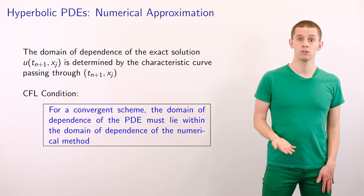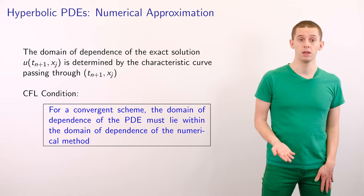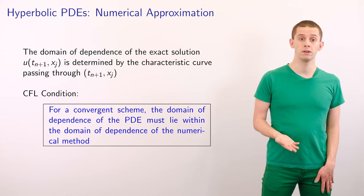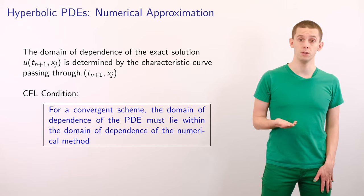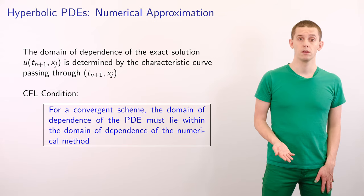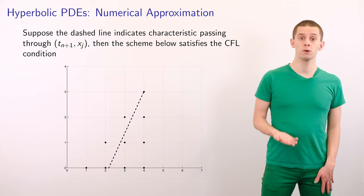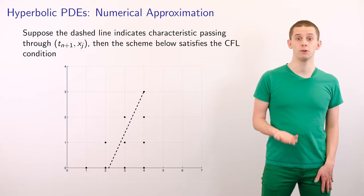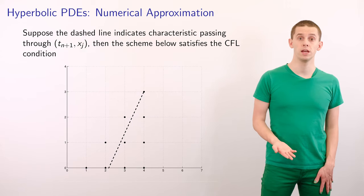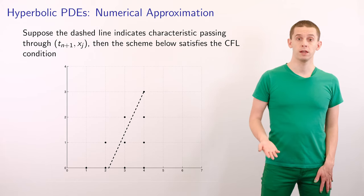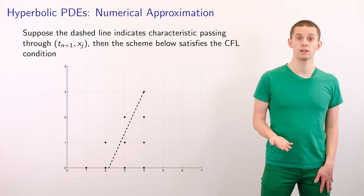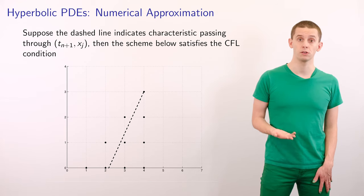And this leads us to the CFL condition, which tells us that for a convergent scheme, the domain of dependence of the PDE must lie within the domain of dependence of the numerical method. So let's take a look at a few examples. Suppose the dashed line indicates characteristics passing through t n plus 1 and x j. So in this case the scheme below would satisfy the CFL condition.